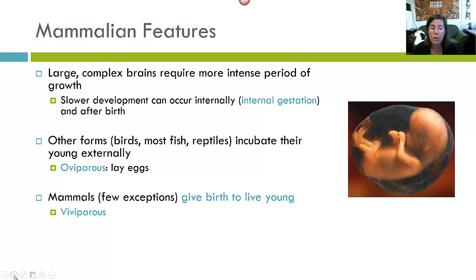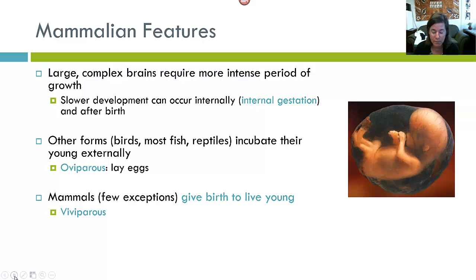Other forms such as birds, fish, and reptiles incubate their young externally — this is known as oviparity, where they lay eggs. Mammals, with very few exceptions, give birth to live young and are referred to as viviparous.